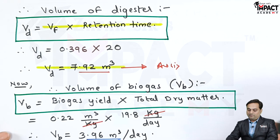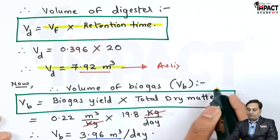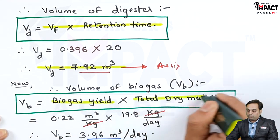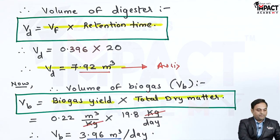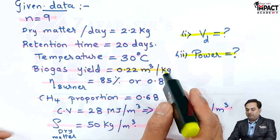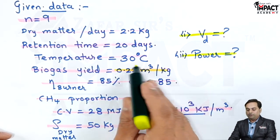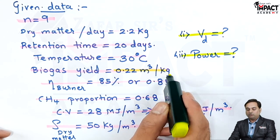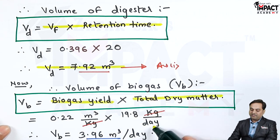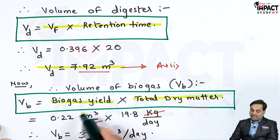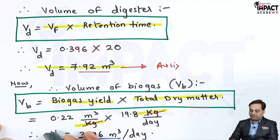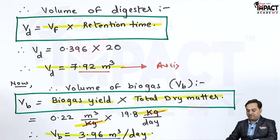Next, we have to find the power available. For that I will find the volume of biogas, V subscript b. It is calculated as the biogas yield multiplied by total dry matter — the unit is 0.22 meter cube per kg, meaning 1 kg of dry matter gives 0.22 meter cube of biogas. I will multiply by the total mass of 19.8 kg per day. The kg units cancel out, giving V subscript b equal to 3.96 meter cube per day.